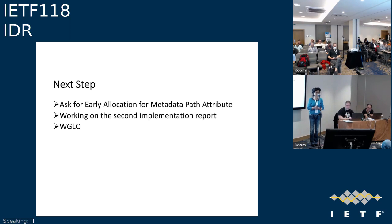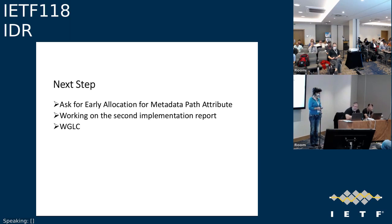The next step is to apply for early allocation for the metadata path attribute code point. A second implementation is on the way and will send a report. After that, the next thing is a working group last call. Jeff responds: the primary thing that triggered a burst of review is asking for the path attribute code point. We want the specification in a much more stable mode before actually allocating that. We have good progress toward the feedback needed, so we'll continue to iterate and hopefully stabilize before moving forward.